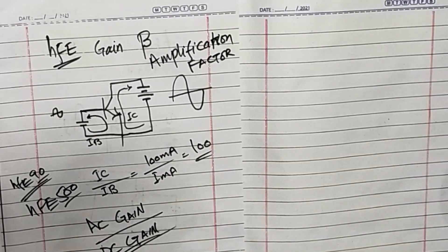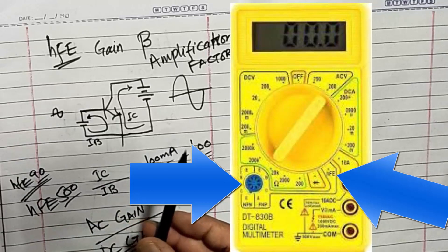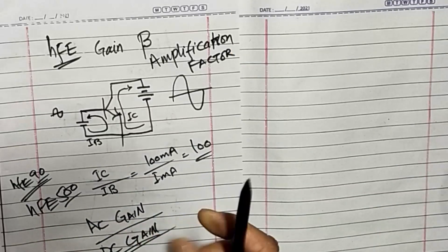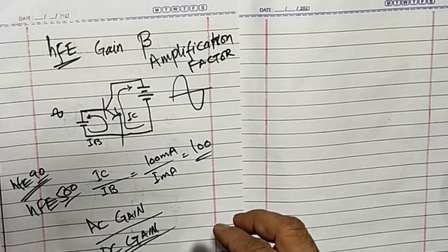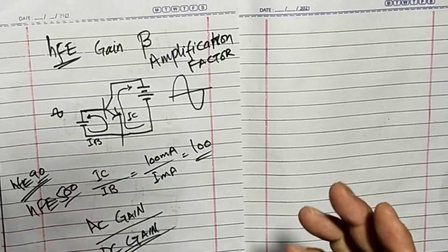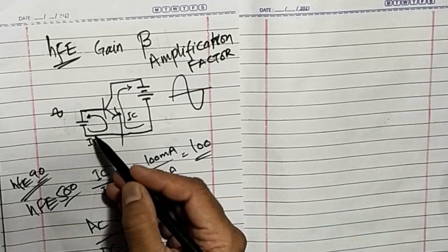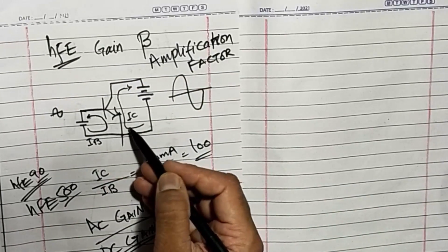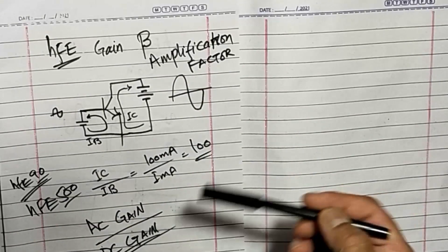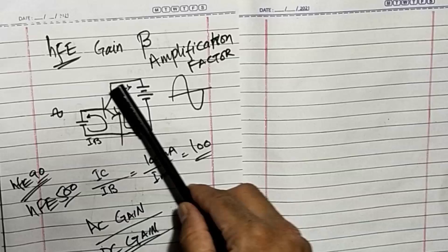In some multimeters, some digital multimeters, we have a transistor test jack and a mode selector. We have to select hFE. When we insert the transistor in the test socket, the multimeter will show the digit, that is hFE or gain beta. It will test the base current and collector current.